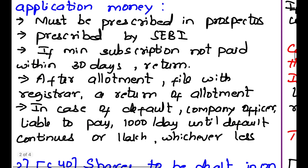After allotment, they should file it with the registrar — a return of allotment. In case of default, they have to pay a penalty of Rs. 1,000 per day until the default continues or Rs. 1 lakh, whichever is less.